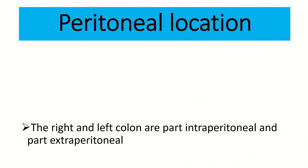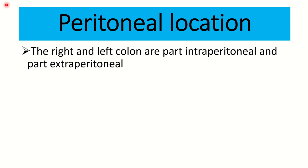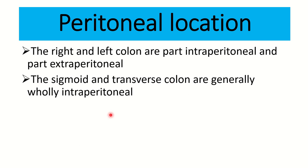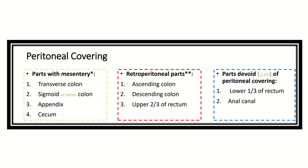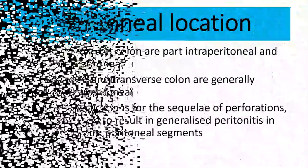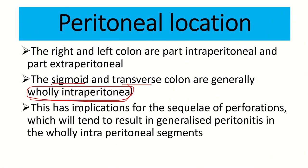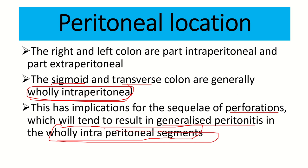Now the peritoneal location: the right and left colon are partly intraperitoneal and partly extraperitoneal. The sigmoid colon and transverse colon are generally wholly intraperitoneal, so they are very mobile structures. This has implications for the sequela of perforations — perforation in a wholly intraperitoneal segment tends to result in generalized peritonitis.